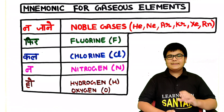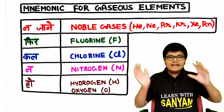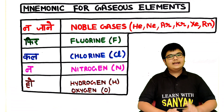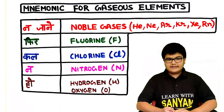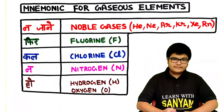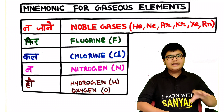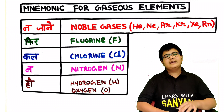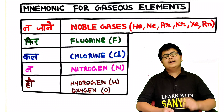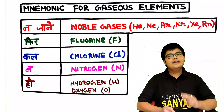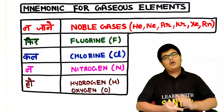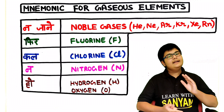Now let's once repeat all the gaseous elements of the periodic table. They are helium, neon, argon, krypton, xenon, and radon. Then from the mnemonic na jaane fir kal na ho, we have fluorine, chlorine, nitrogen, oxygen, and hydrogen.